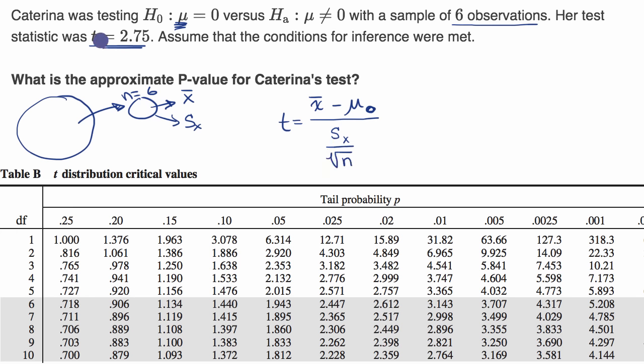In this example, they calculated all of this for us. They said this is going to be equal to 2.75, and so we can just use that to figure out our p-value. But let's think about what that is asking us to do.